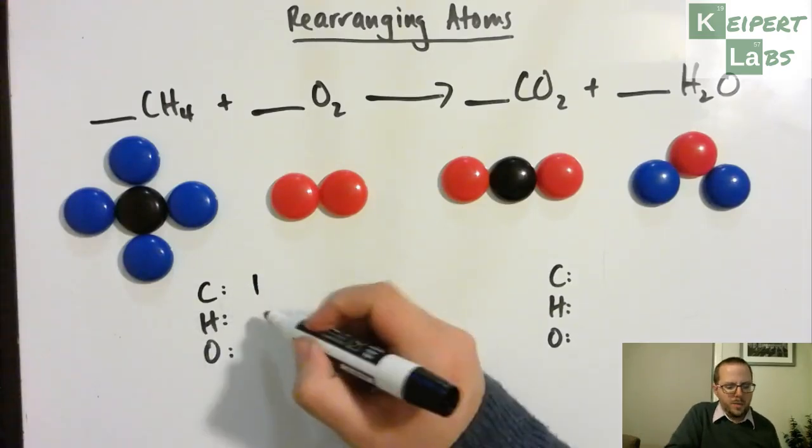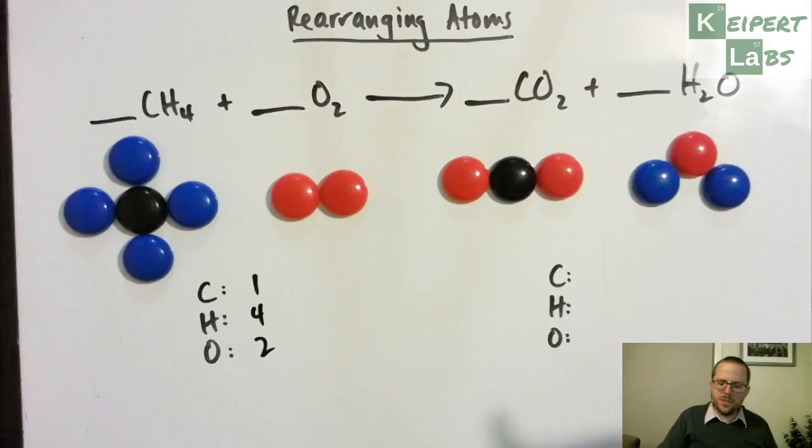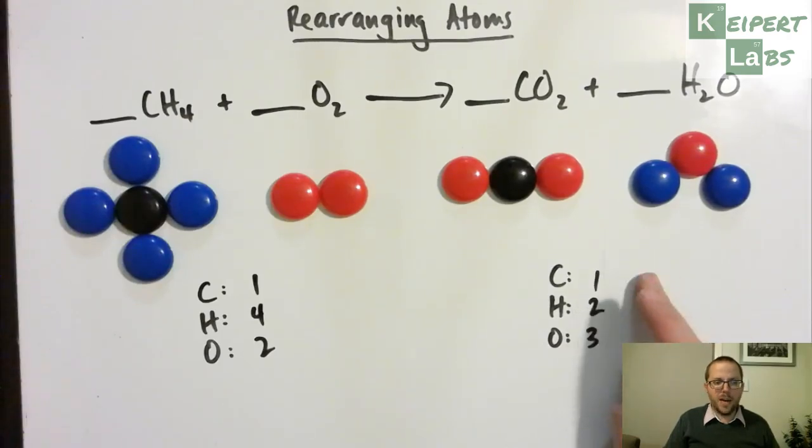But now I've got three elements to consider, so that kind of adds a little bit of complexity. So so far I've got one carbon, four hydrogens, two oxygens. I've got one carbon. I've got two hydrogens and three oxygens. So the first thing that I need to do is that I don't have enough hydrogens over here. I've got more oxygens. I've got the same number of carbon, but I need more hydrogens here first.